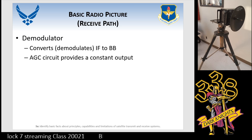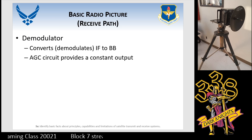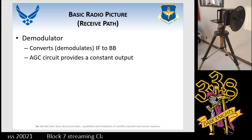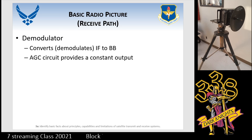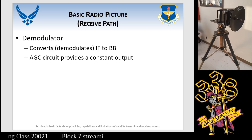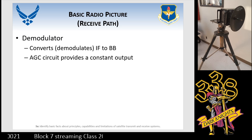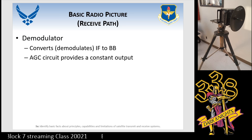We also have something called AGC. AGC is always a receive technique used to take that incoming RF and give a constant output. For a variant RF input, you're going to get a constant output. If you set your dish up down the hallway, that's a pretty strong signal. My audio should sound the same if I'm 8 to 10 miles out with a very weak signal. AGC is the factor in keeping your output constant.